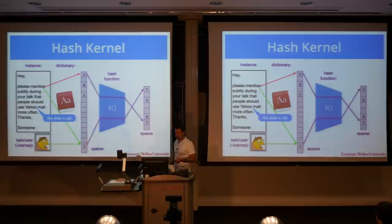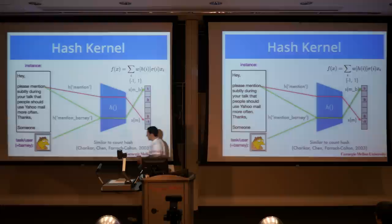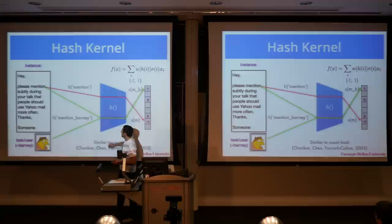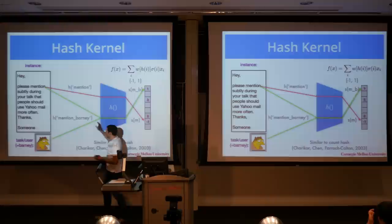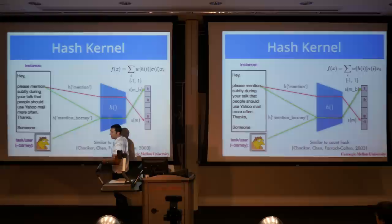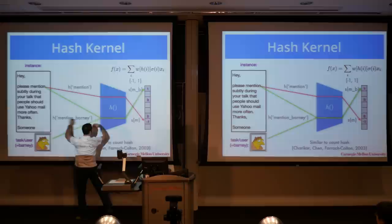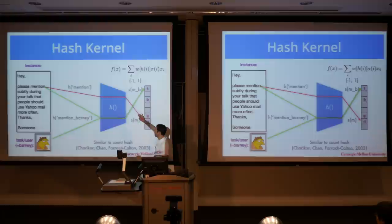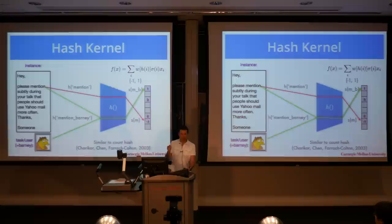It turns out we're not the first ones to have come up with this — it's something that Charikar, Farrach-Colton, and others thought about in the context of the count sketch. Now here's the key insight: you really don't need this dictionary at all. All the dictionary does is look up a word and turn it into a number; then the number is turned into another number by the hash function. Instead, you just feed the string identifier directly into the hash function. On top of that, you multiply the contribution by one or minus one — I'll refer to this as a Rademacher hash, or a one-bit hash. One-bit hashes are easily obtained from generic hash functions: just pick any bit you want, say bit number 42, and check whether it's one or minus one.